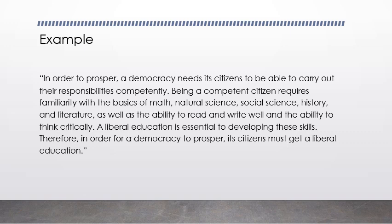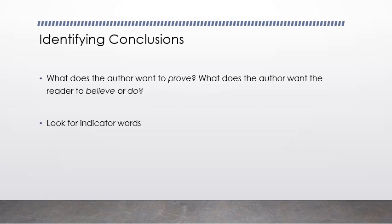Let's look at an example: 'In order to prosper, a democracy needs its citizens to be able to carry out their responsibilities competently. Being a competent citizen requires familiarity with the basics of math, natural science, social science, history, and literature, as well as the ability to read and write well and the ability to think critically. A liberal education is essential to developing these skills. Therefore, in order for a democracy to prosper, its citizens must get a liberal education.' We need to determine: what's the conclusion and what are the premises? To identify the conclusion, we ask ourselves what does the author want to prove.